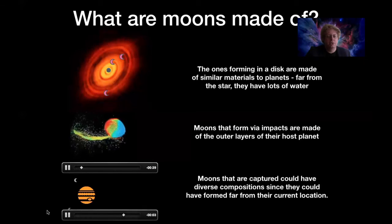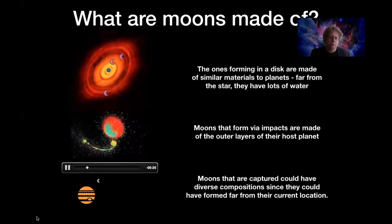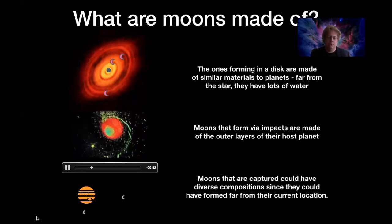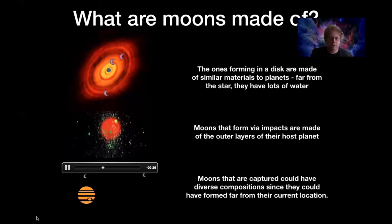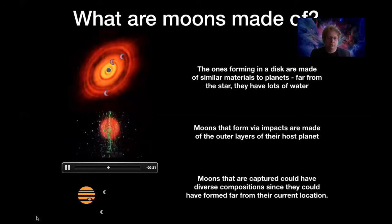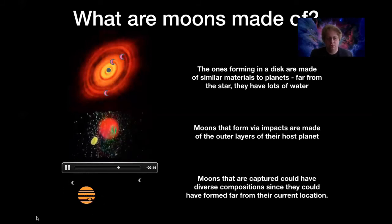If you're looking at moons that were captured, their compositions could be pretty much anything, because those compositions depend on where the moons originated, not where they happen to be now. These moons could have been asteroids, Kuiper Belt objects, comets, or even moons from another planet that were ejected. So it's really hard to know or predict what captured moons are made of.